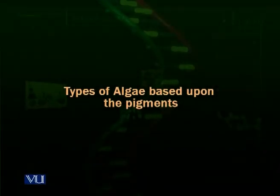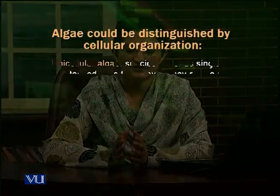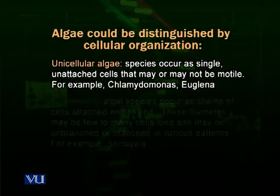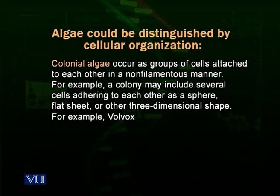Algae are usually broadly classified based upon their pigments, but we also classify algae based upon their cellular organization — that is, how their cells are organized. We classify them into three types based on cellular organization: the unicellular algae, the filamentous algae, and the colonial algae.